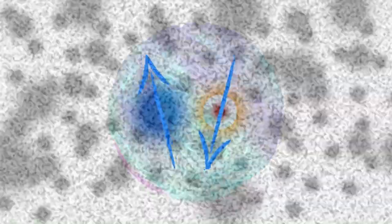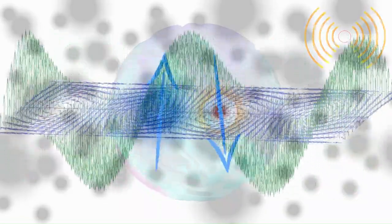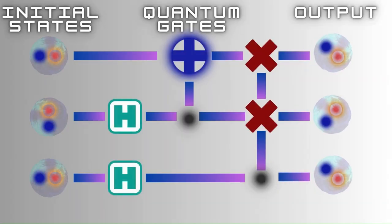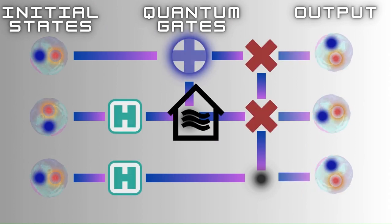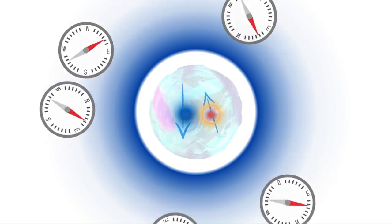In addition to their long coherence times, NV centers are relatively insensitive to external noise, such as magnetic fields, electric fields and temperature fluctuations. This robustness allows for their operation in a variety of environments, including ambient conditions, without the need for complex shielding or stabilization techniques.